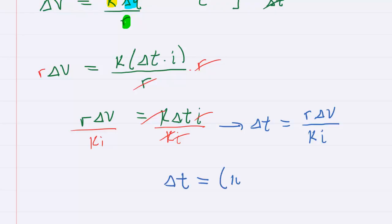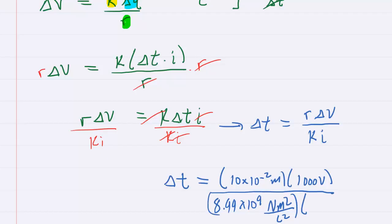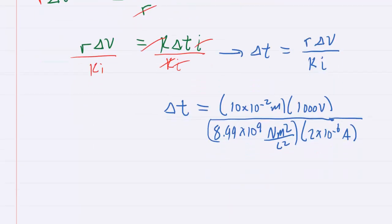So let's go ahead and do that. The radius is 10 centimeters, but make sure you multiply that by 10 to the minus 2 to get it into meters. The change in potential was 1,000 volts. k coulombs constant is 8.99 times 10 to the power of 9. And then it has this unit of Newton meters squared per coulombs squared. And then times the net current, which was that 2 times 10 to the minus 6. And that can be represented as amps or coulombs per second. So you punch this into your calculator.